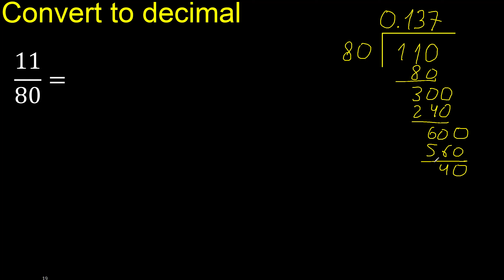Subtract, ok. There is no number, therefore complete. 80 multiplied by which number? Multiplied by 5.